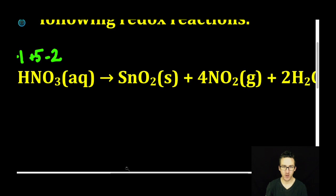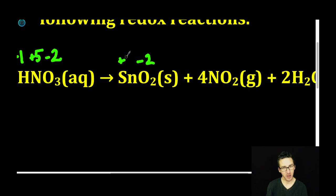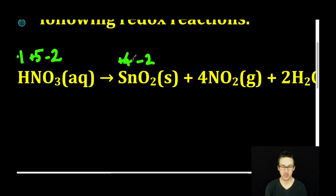Moving over to tin(IV) oxide — oxygen is minus two, tin is plus four. I love the ionic compounds. Super easy — it's just the charges of their ions.